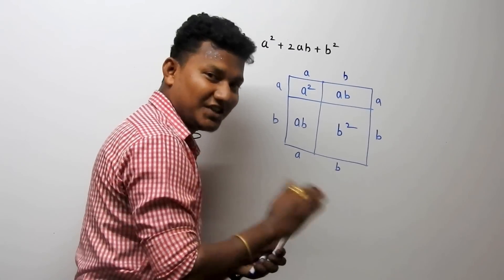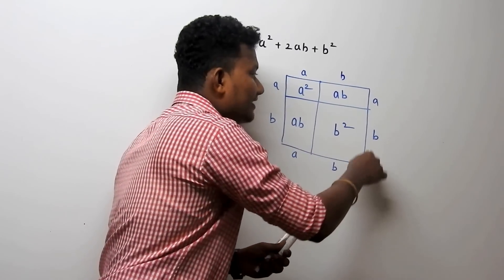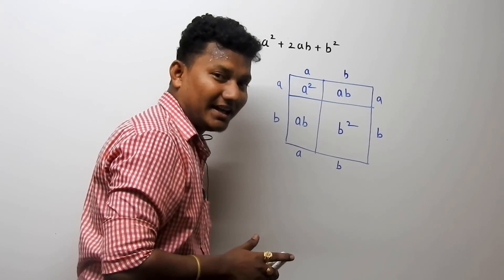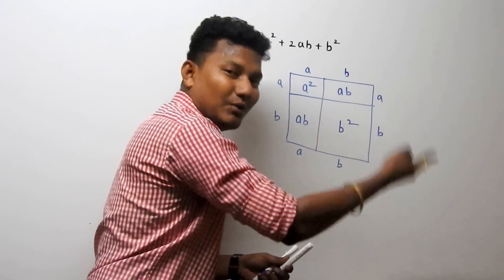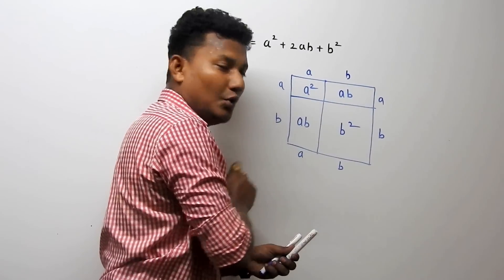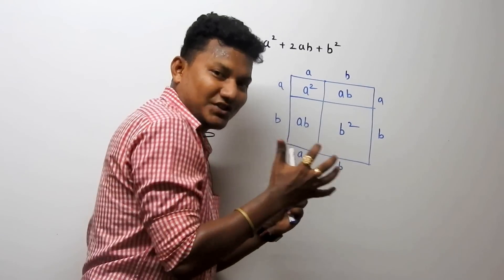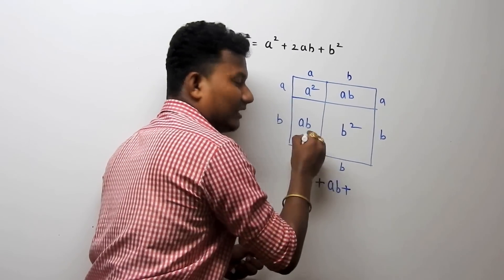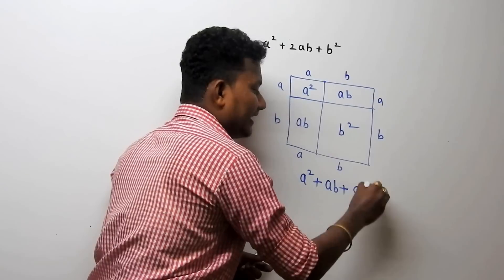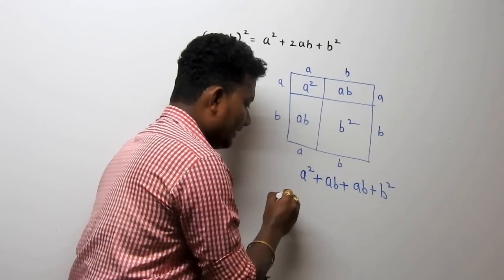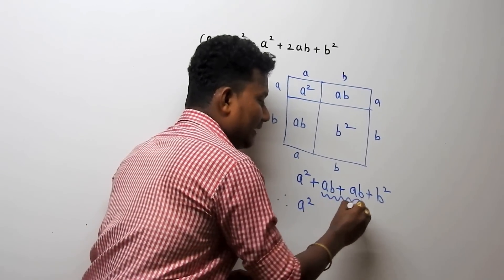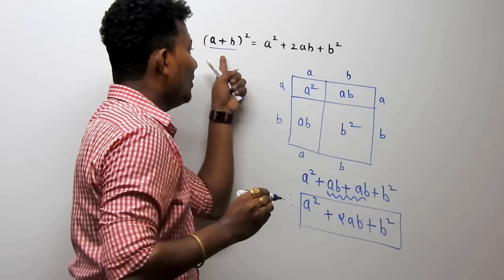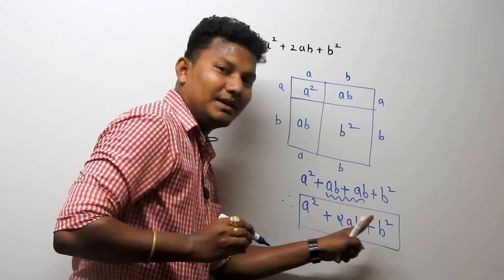Now the final step — find the area of the complete square. The area of the complete square equals area 1 plus area 2 plus area 3 plus area 4. That gives us: a squared plus ab plus ab plus b squared. Therefore, (a + b) whole square equals a squared plus 2ab plus b squared. Hence it is proved.